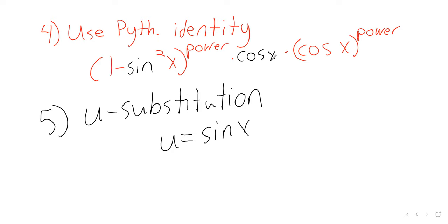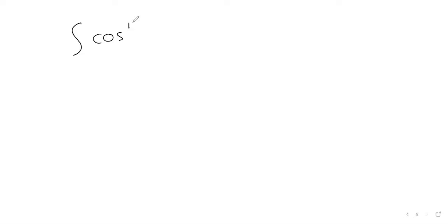In practice, this only works well for relatively small powers. What if we had cosine to the 17th of x times sine squared of x dx? We can hypothetically deal with this — the 17 is an odd power, so we have a trick that is supposed to allow us to take this integral. In practice, not really.